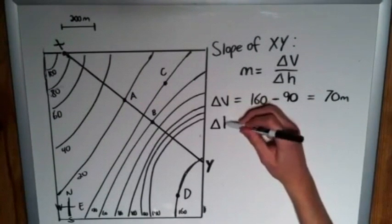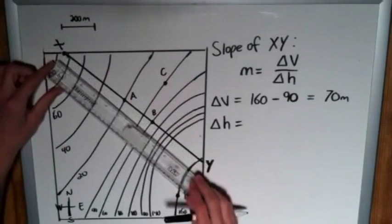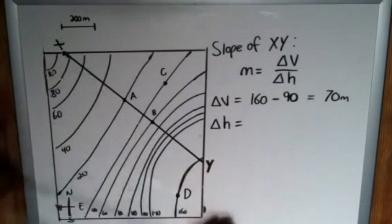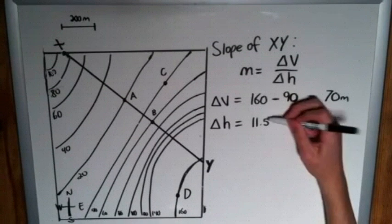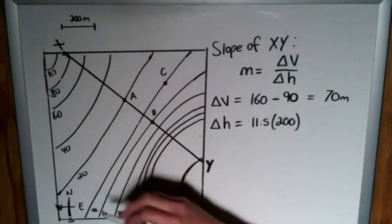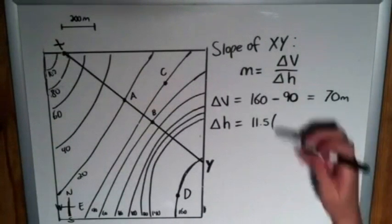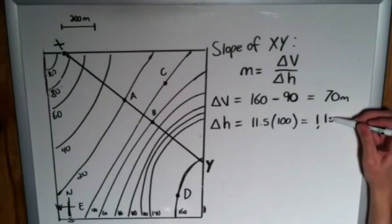Now the only other piece to find is delta H, or our change in horizontal position, which we can find using this scale here. I have 200 meters represented by 2 inches. So we can just measure the length of this line here real quick. That is about 11.5 inches total. So we can write that as 11.5 multiplied by... well, actually, if 2 inches represents 200 meters, we just multiply it by 100, which gets us 1150 meters.